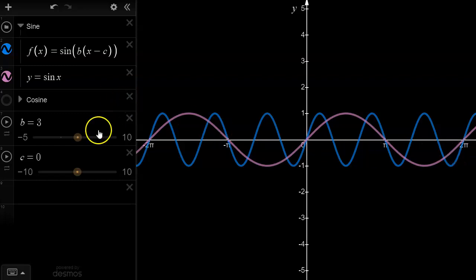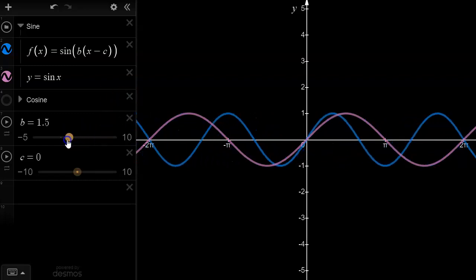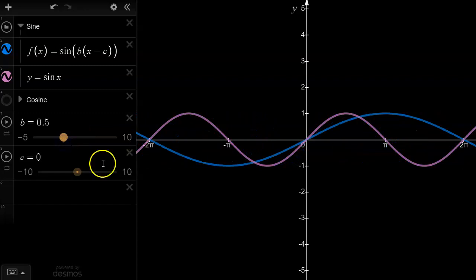Let's try one more example. If we graphed y equals sine half x, now what we can get is we can only get half of a cycle on the interval between 0 and 2pi.